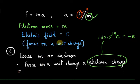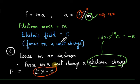So my force on an electron now becomes force on a unit charge, which is capital E, into the electron charge, which is small minus e. Then my electron acceleration will be F over M, F is minus e into capital E. So this becomes minus e into capital E divided by M.